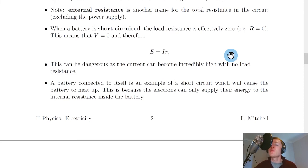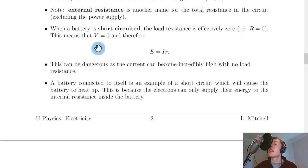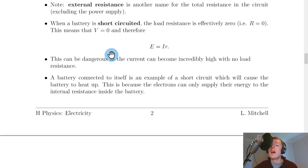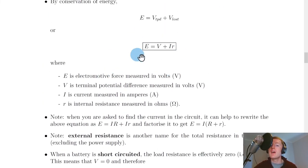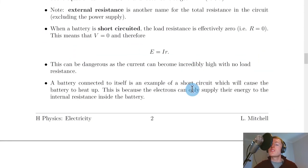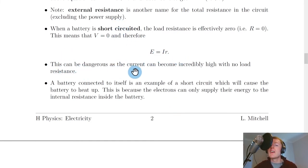One last term is short circuit. When a battery is short-circuited, the load resistance is effectively zero — we set external resistance R = 0. This means the terminal potential difference V = IR = 0 as well. Our equation then simplifies to E = ir, a simplified equation for a short circuit condition.